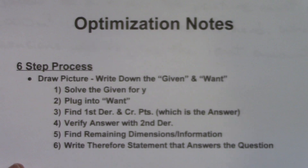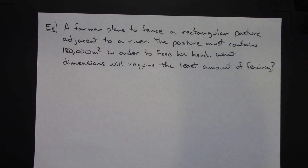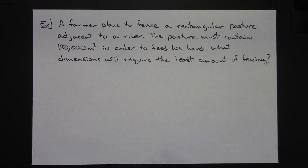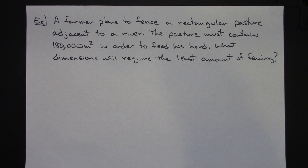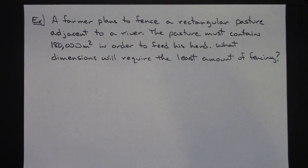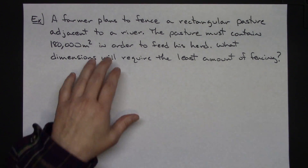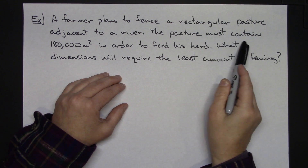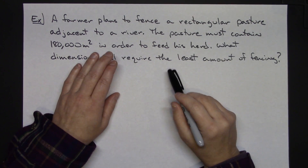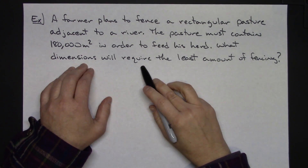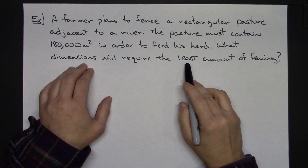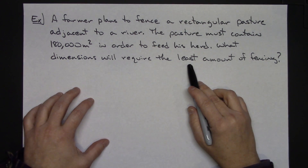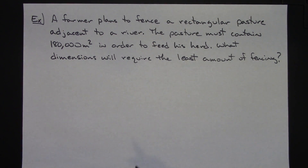We'll work out an example. Our example here is a pretty typical standard story problem for an optimization problem. A farmer plans to fence in a rectangular pasture adjacent to a river. The pasture must contain 180,000 meters squared in order to feed his entire herd. What dimensions will require the least amount of fencing? So it's an optimization where we are trying to minimize the amount of fencing.